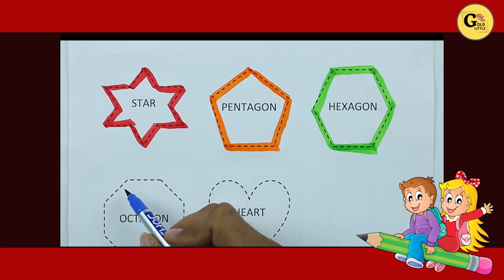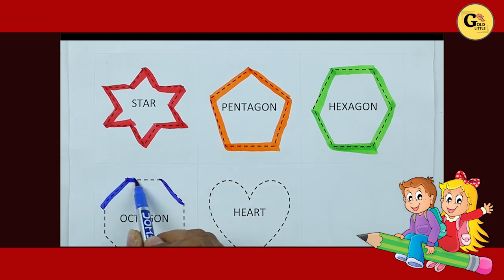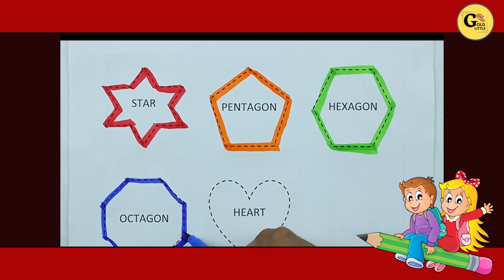Octagon: one line, two line, three line, four, five, six, seven, eight. Eight line means octagon.